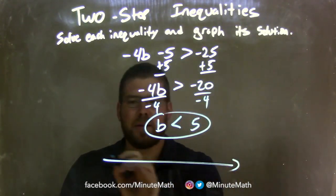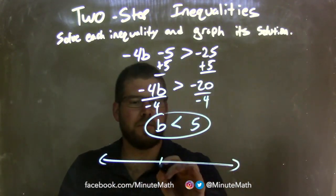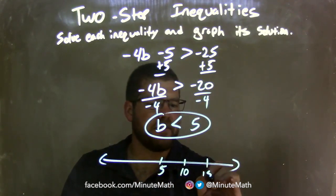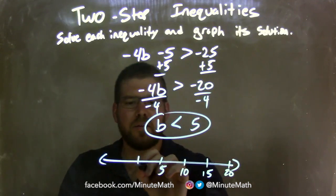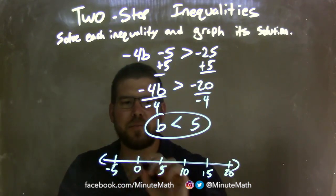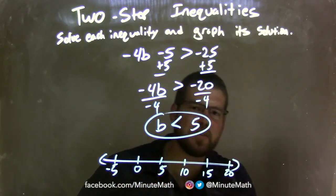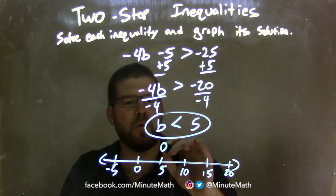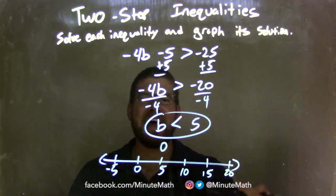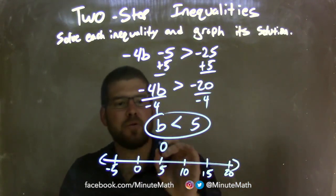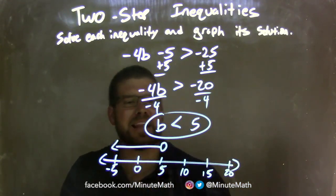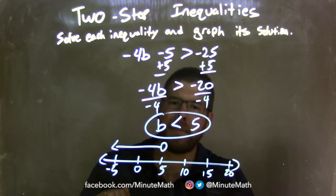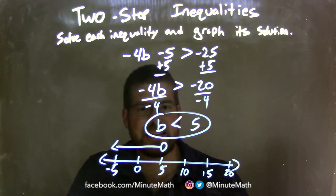Now I need to graph it. Let's put 5 right in the middle, going by 10s: 10, 15, 20, and 0, negative 5. Since b is less than 5, not equal to but just less than, we have an open circle at 5. Then I put my arrow to the left, showing that b is less than 5. We have our graph that matches the final answer of b is less than 5.